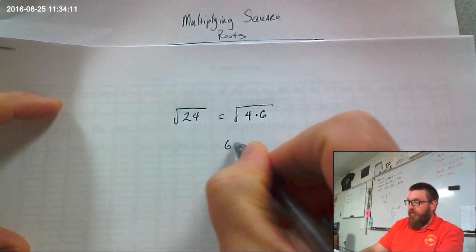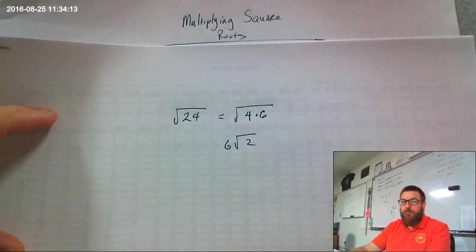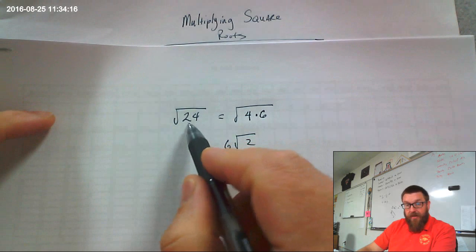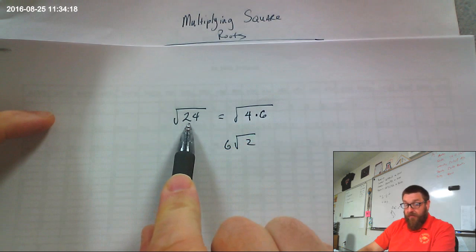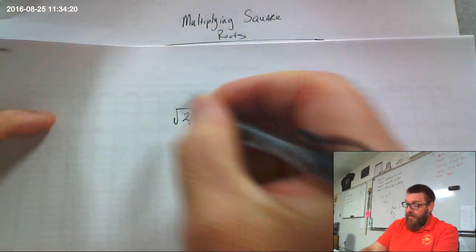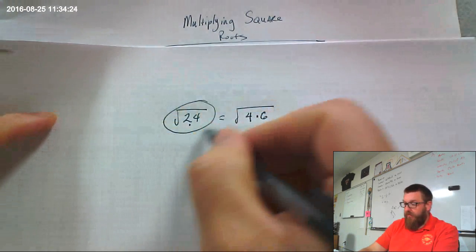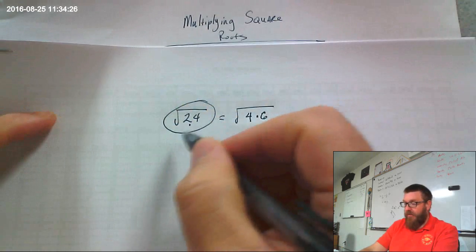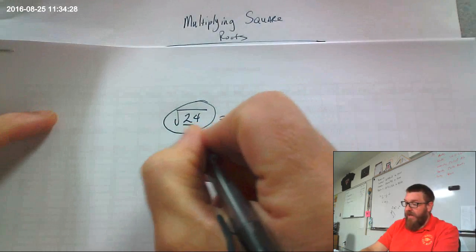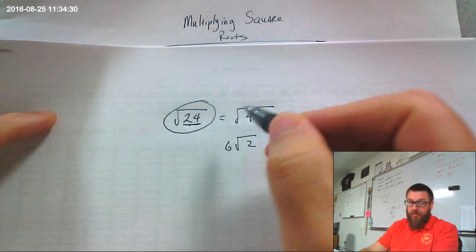And then they would write 6 times the square root of 2, which is wrong, because this is asking what number times itself equals 24. That's what this is asking. Now I pointed it at 24, but this is all one thing. It's all one number, it's not 24. 24 is the radicand, it's part of the whole number.